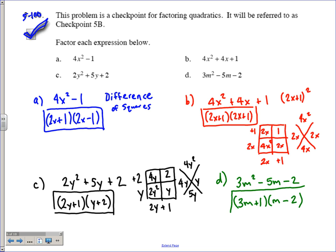How do you check it? Multiply out your two binomials, make sure you get your trinomial as the product. Alright, there are your answers for checkpoint problem 5-100.